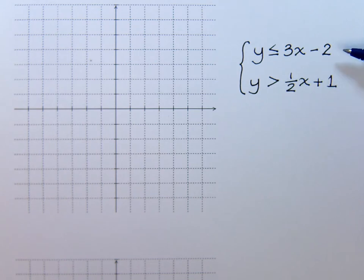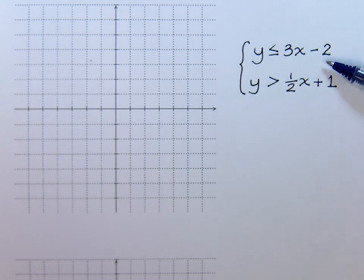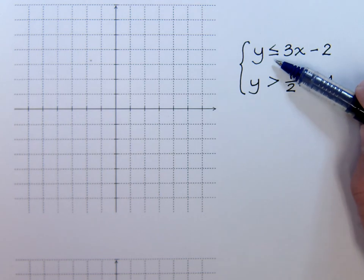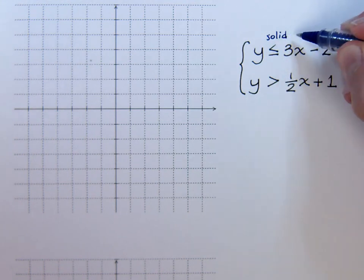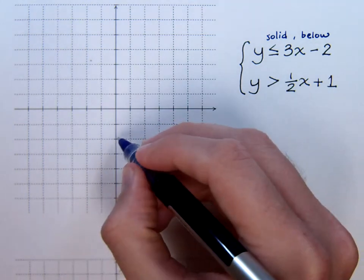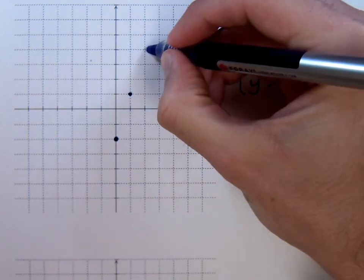We start with the first linear inequality, which is already solved for y, so it's easy to identify the slope and y-intercept. Since this inequality uses 'less than or equal to,' the line is going to be solid and we'll be shading below. We start with the y-intercept at (0, -2) and a slope of positive 3 — so up 3 and to the right 1.